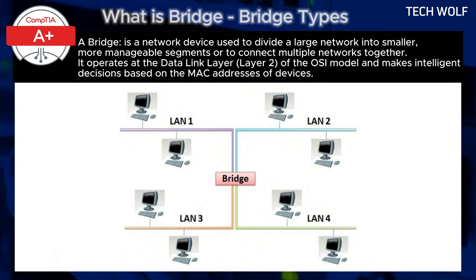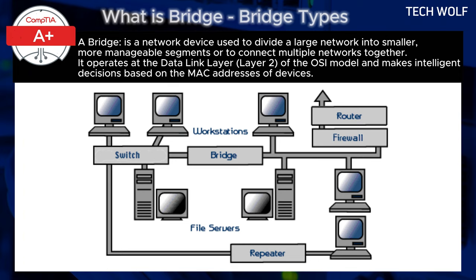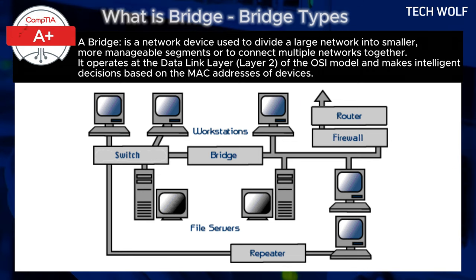A real-world example: Imagine an office building with two departments — the marketing team and the sales team — each using its own network segment. A bridge connects these two segments so they can share resources when needed. The bridge monitors traffic between the segments. If a marketing computer needs to send data to a sales computer, the bridge allows the traffic through. However, if two marketing computers are communicating with each other, the bridge keeps the traffic within the marketing segment, reducing congestion on the overall network.